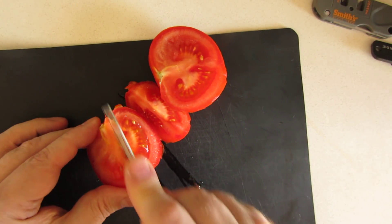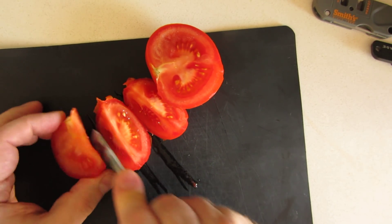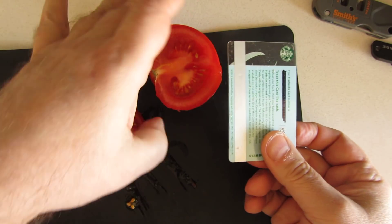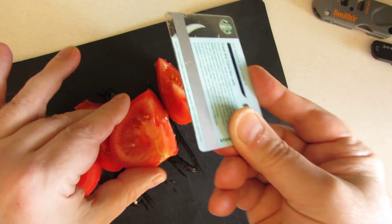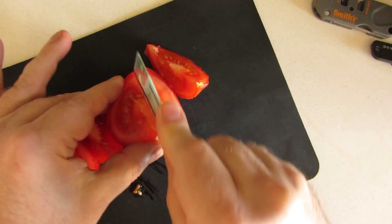So I guess in an emergency, if you lose your knife but you still have your sharpener, you can cut a tomato with a credit card you sharpen with a V-sharpener.